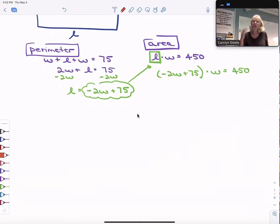So the first thing I'm going to do is I'm going to simplify the left side of that equation by distributing my multiplication times W. So I have negative 2W times W, negative 2W squared, plus 75W and that's equal to 450. I know I can't use the square root method to solve this because I have W in two places. So I'm going to see if I can factor it. So I'm going to set one side equal to zero by subtracting 450 from both sides.